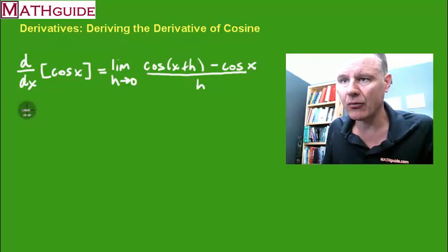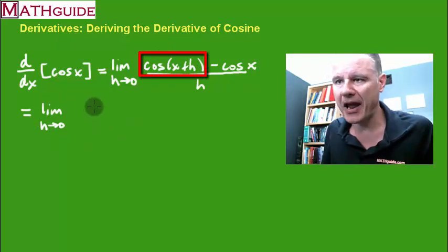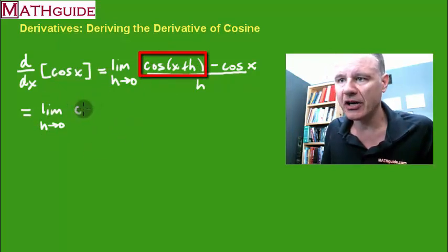So we're now going to play around with this. If I continue, I'm going to take the limit as h approaches 0. I'm going to use the sum formula to expand that: cosine cosine sine sine. If you remember this from trig, you should have seen this.